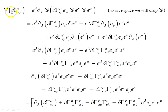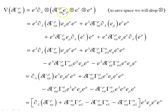We want the covariant derivative of this object, so we expand it out in basis form using the tensor product. When we expand that out, we want the partial derivative of each of these terms: the partial derivative of the component, then of each basis vector, producing altogether four terms — the partial derivative of the first, second, third, and fourth objects.